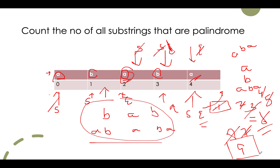For each index we calculate the number of palindromic substrings possible with the current index as the midpoint of those palindromic substrings. The complexity for this approach would be O(n²).